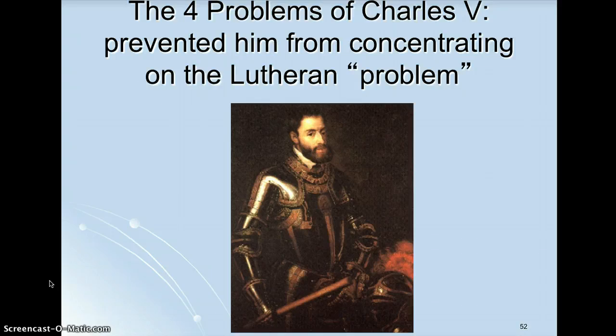As we pick up this lecture, we know that Martin Luther had nailed the theses to the wall. He had denied the authority of the Pope and had at this point split his church. Charles is the Holy Roman Emperor during this time.